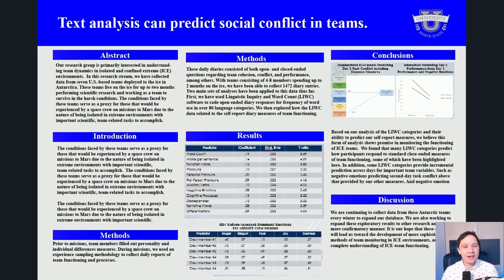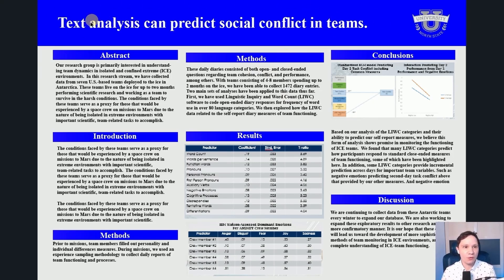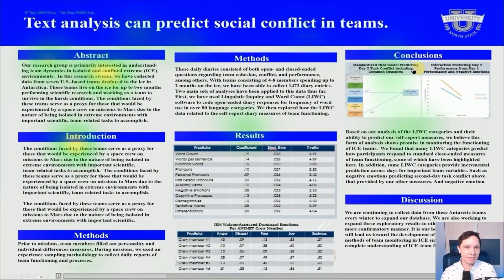Let's see the less effective posters. No discussion of ineffective design is complete without the old wall of text approach — but this particular one has one extremely effective modification. If your PI won't let you use modern layouts, you can make one tiny change that works much better: the top doesn't have authors under the title; it has negative space around the title area. That negative space helps people find signal in the noise, and it has a really clear takeaway statement: 'Text analysis can predict social conflict in teams.' Watch how well this negative space draws attention right across the top — super clear. But then attention immediately scatters all over the rest of the poster.